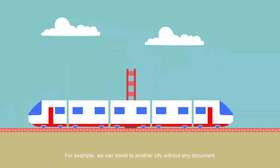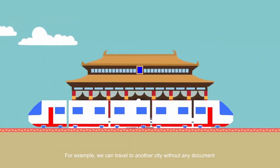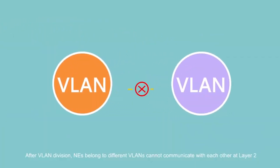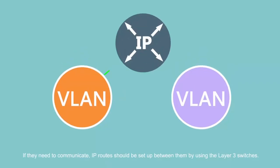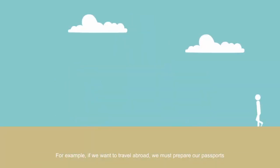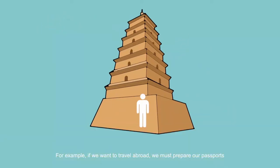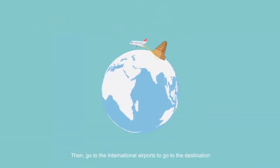After VLAN division, network elements belonging to different VLANs cannot communicate with each other at Layer 2. If they need to communicate, IP routing rules should be set up between them using Layer 3 switches. For example, if we want to travel abroad, we must prepare our passports, then go to the international airport to reach the destination.